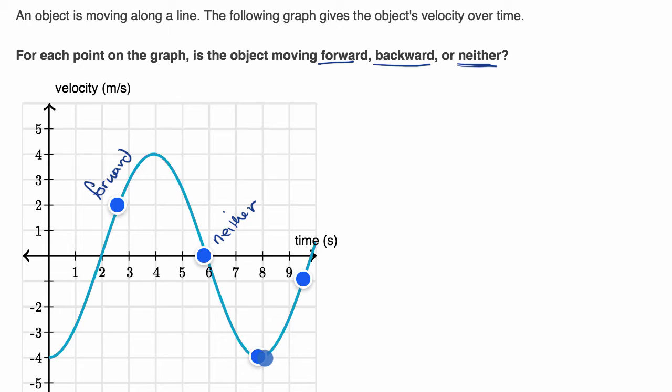Now over here, our velocity is negative four meters per second. So one way to think about it is we're moving four meters per second backward. So I'll write backward.